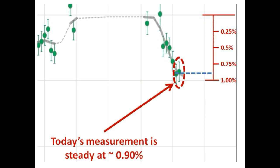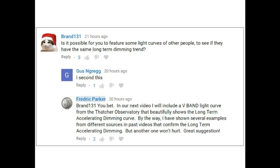This is a really big object that has rolled in and has the light-blocking effectiveness of a Jupiter-size object at this point in time. As always, we will continue to track this latest short-term dimming event.